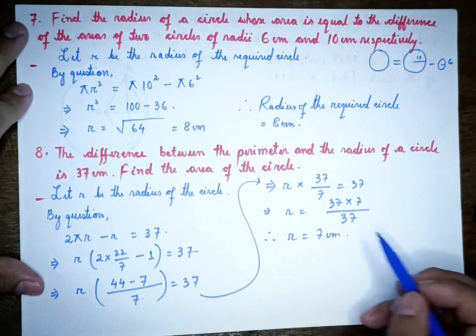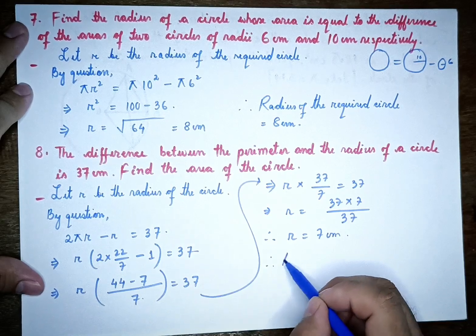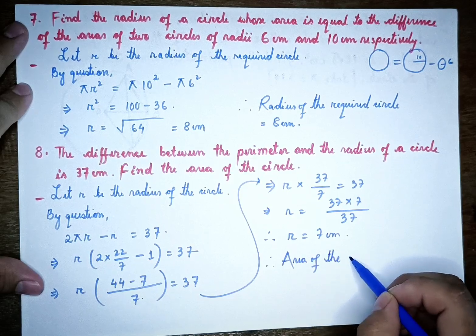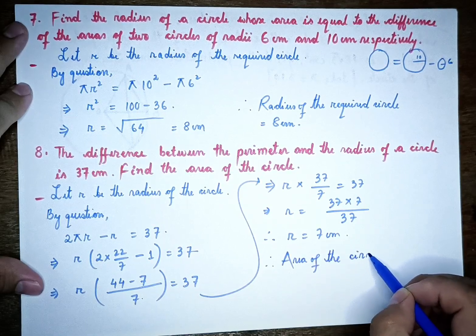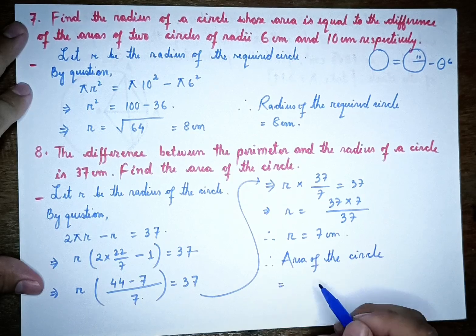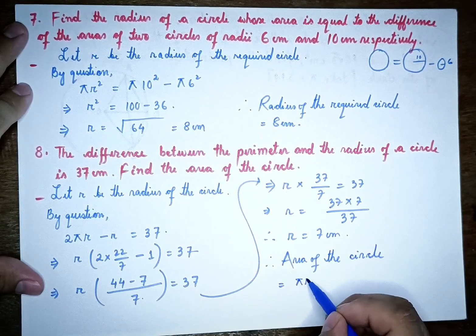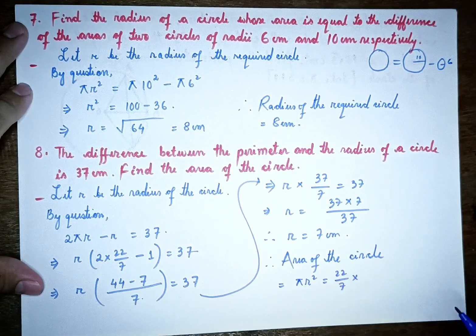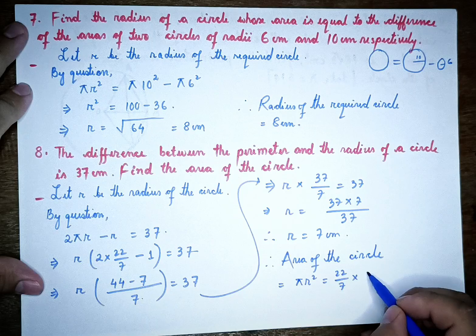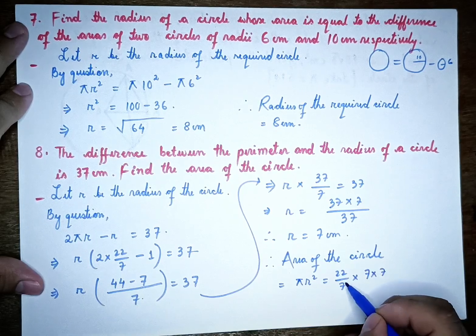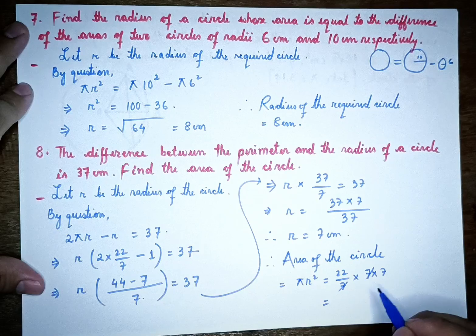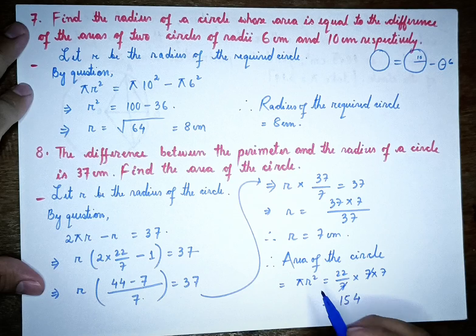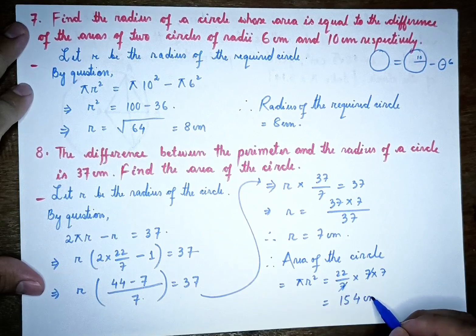Now we find the area of the circle. Area equals pi r squared, which is 22 by 7 times 7 squared. This gives 22 by 7 times 49, which equals 154. So the area of the circle is 154 square cm.